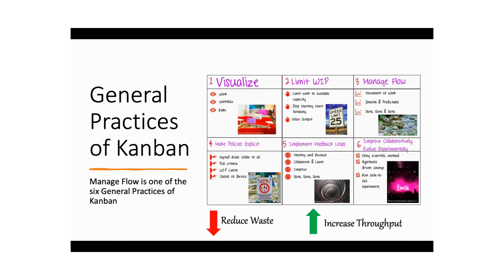The second general practice of Kanban is limiting the work in progress. When you create WIP limits in your system, it creates a pull system. The pull system helps you unburden the people who are involved in delivering that particular piece of work, as against a push system, which burdens people.